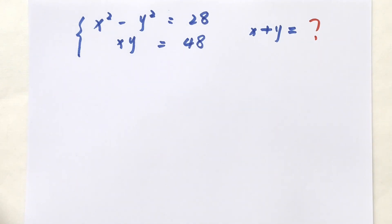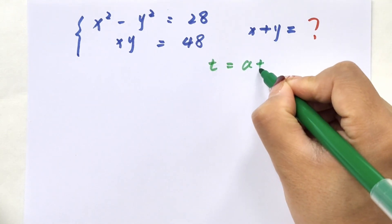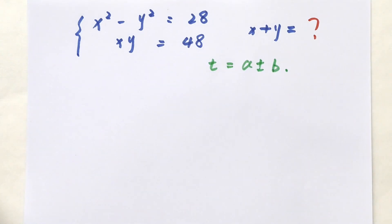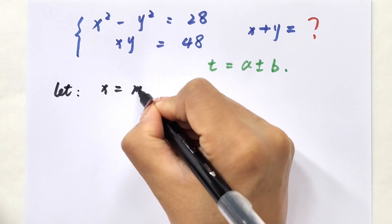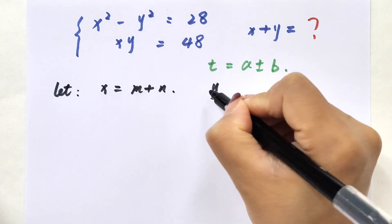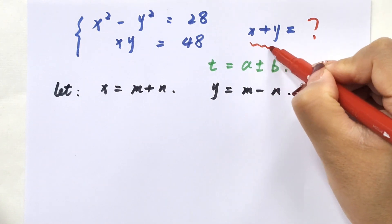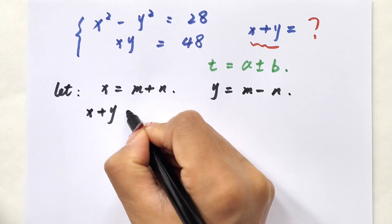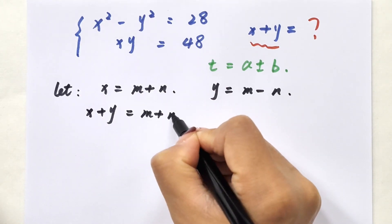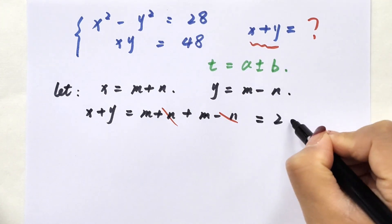First, we know any number can be set as the sum or difference of two numbers. So we let x equals m plus n and y equals m minus n. So x plus y can be written as m plus n plus m minus n, which simplifies to x plus y equals 2m.